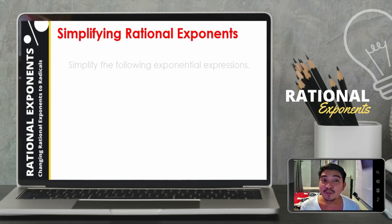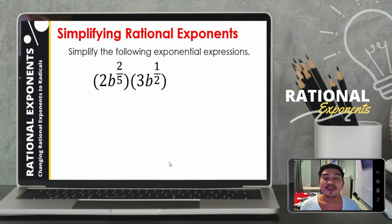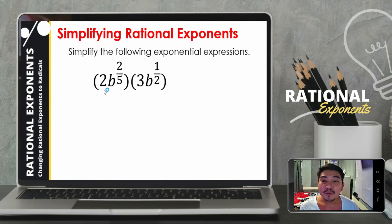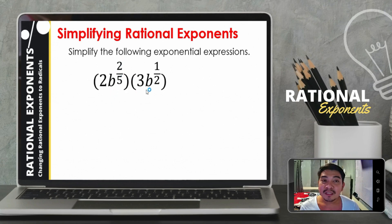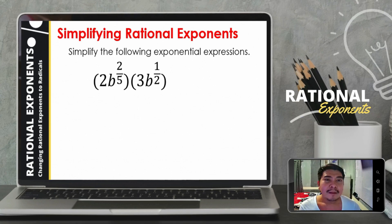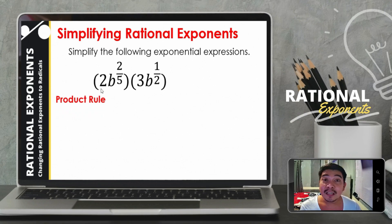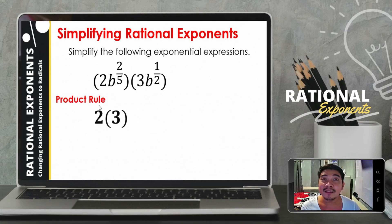Let us proceed with example number 2, still simplifying exponential expressions with rational exponents. We are given 2b raised to 2 fifths times 3b raised to 1 half. We are multiplying exponential expressions, so we can use the product rule. First, let us multiply the numerical coefficients: 2 and 3.